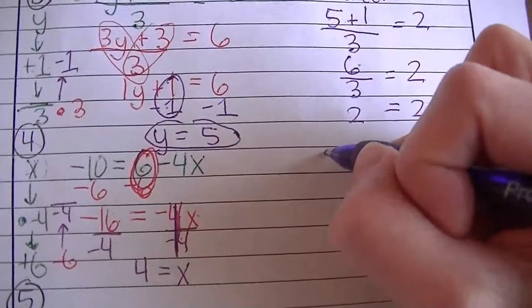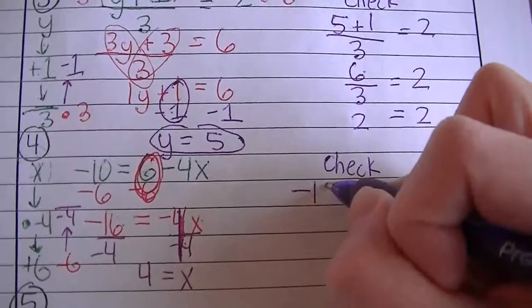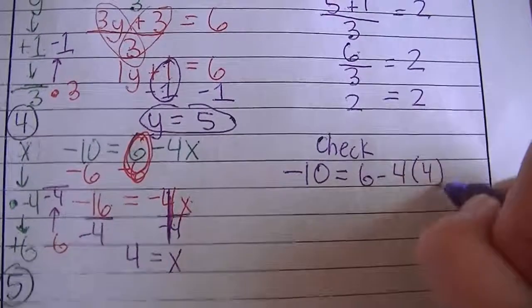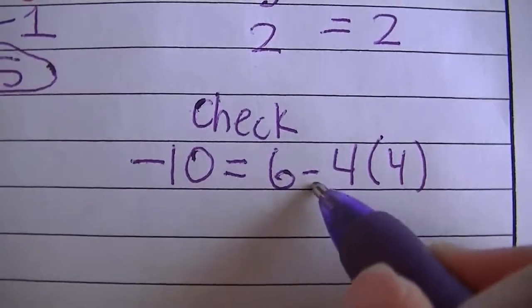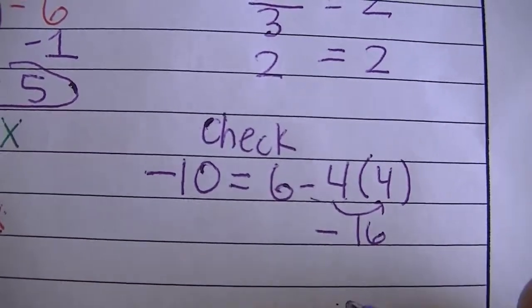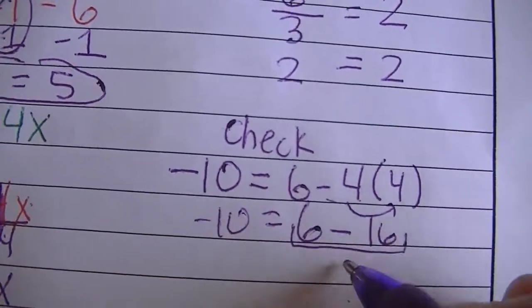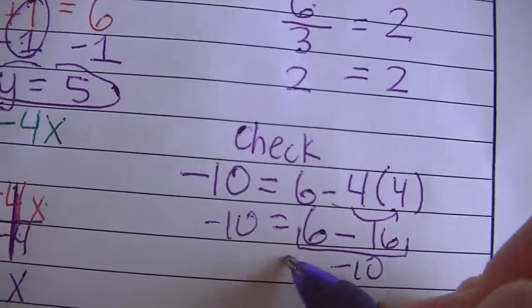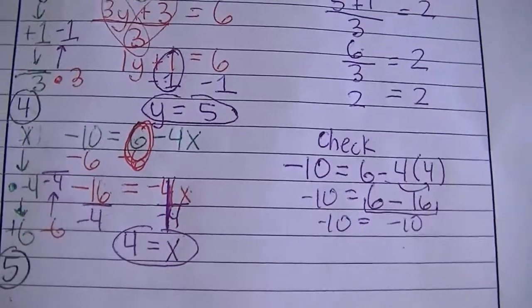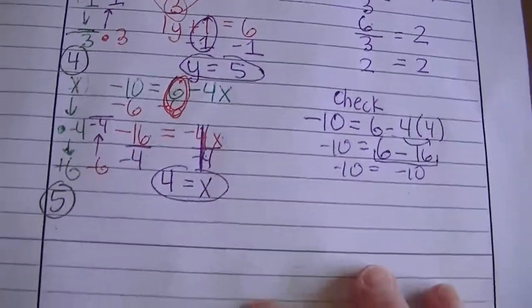Let's check that. Substitute your value in for x. Negative 4 times 4 is negative 16. Then bring down your 6. 6 take away 16 is negative 10. And that equals negative 10 over there, so that's correct. The value of x is 4, because when I put that 4 in there, both sides are equal — it's the definition of an equation.